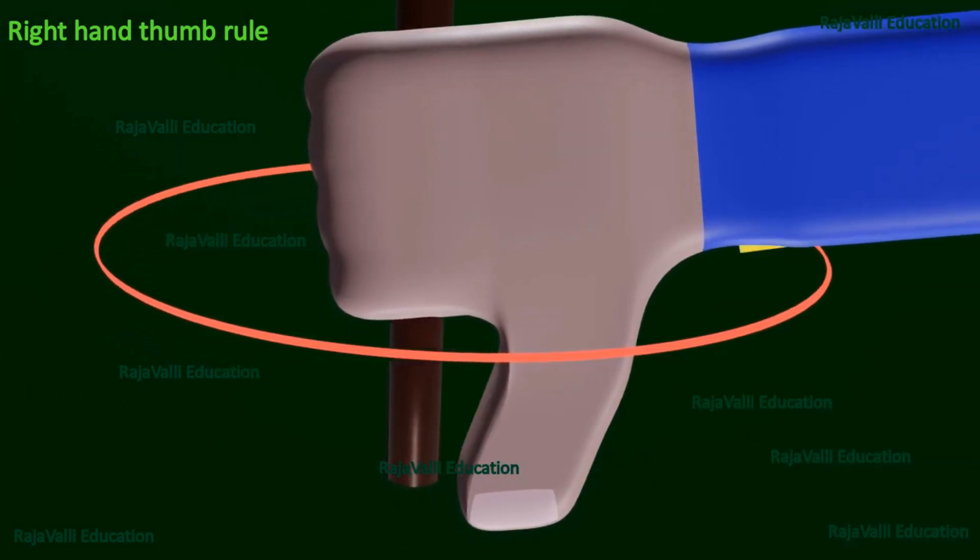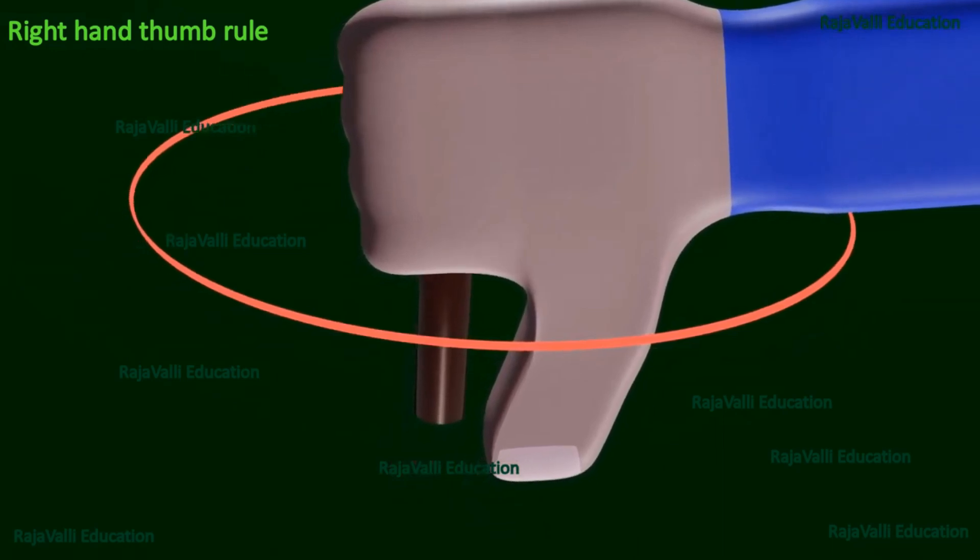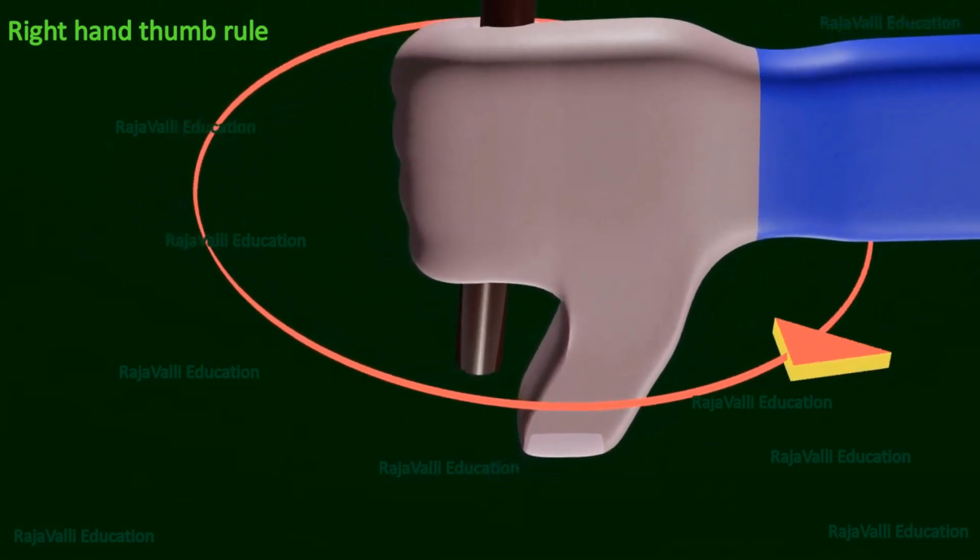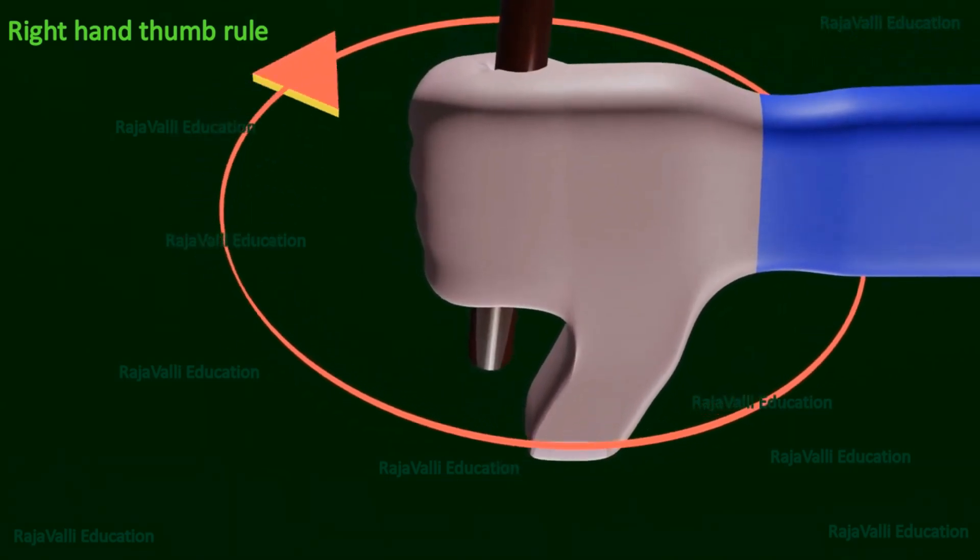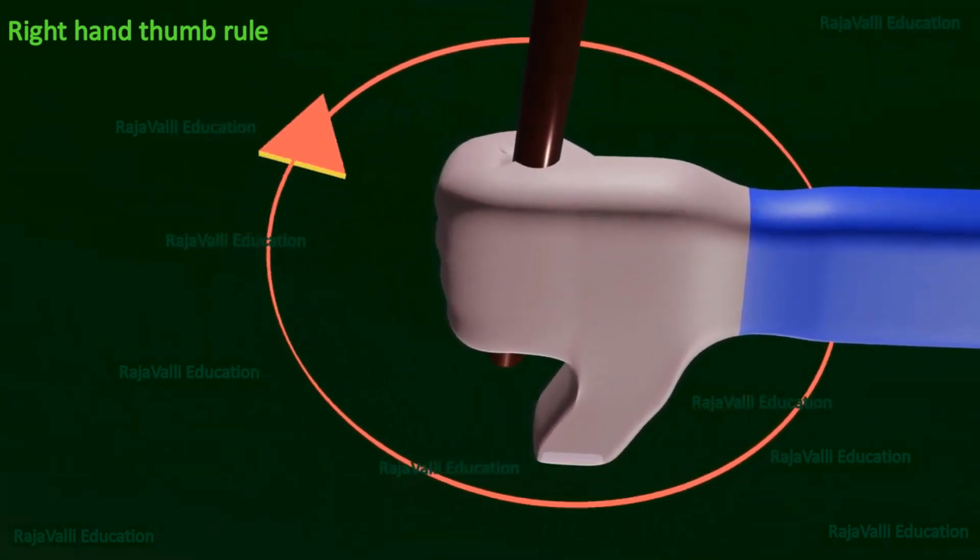If the current flows in the direction of the thumb, now it is in downward direction, then the magnetic field lines follow the other fingers holding the conductor. So, the magnetic field lines are in clockwise direction.